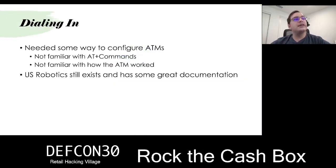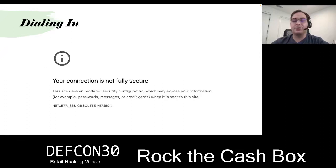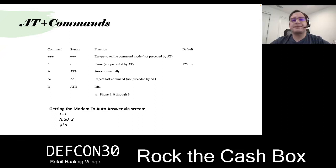We needed some way to configure the ATMs, but we weren't familiar with them. They have a guide but it's a general maintenance guide. U.S. Robotics still sort of exists and has some great documentation, as long as you're able to use an old browser. Key AT commands include +++ for command mode, A for answer, slash for repeat, and the dial command. When you do ATS0=2 it would auto-answer, and you needed the proper newlines otherwise it wouldn't communicate right.